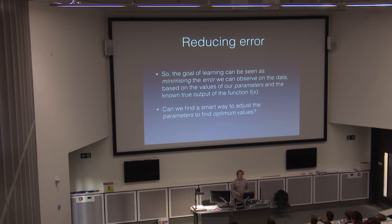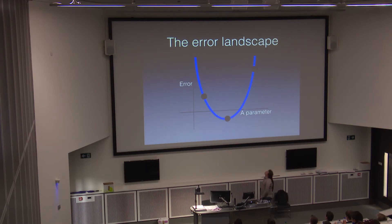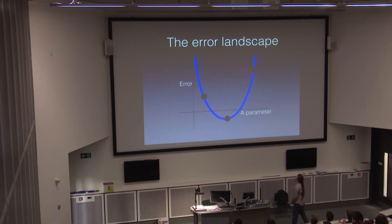Machine learning can be seen as an optimisation problem, where we're trying to minimise some kind of error function based on some set of parameters. So is there a way we can adjust the parameters, find the optimum values of them — the minimum error? As it turns out, yes.